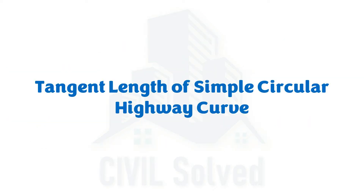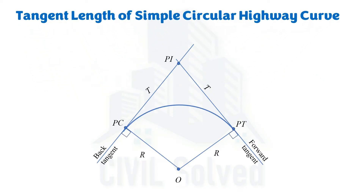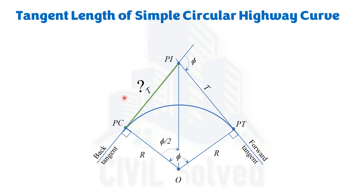Let's discuss the tangent length of a simple circular highway curve first. Recalling the basic sketch of the simple circular curve — this is the deflection angle, the angle subtended between the back and forward tangent. From the basics of geometry, the central angle subtended by the curve will also be the deflection angle. If we draw a vertical line between point O and PI, this total deflection angle can be divided into two halves. The tangent length should be calculated when the basic data — radius and deflection angle — is given.